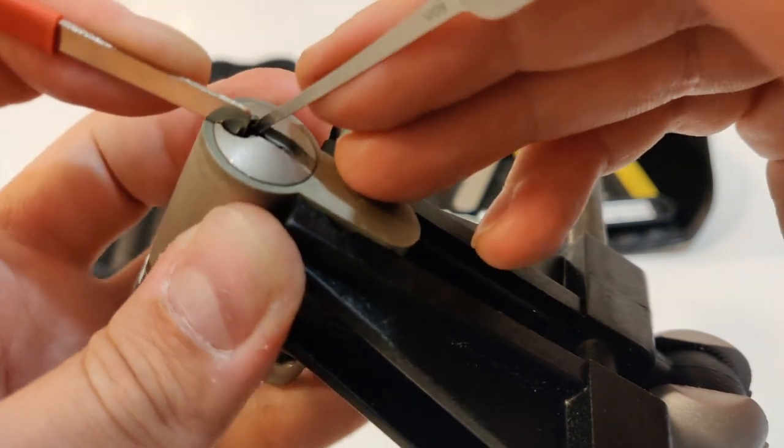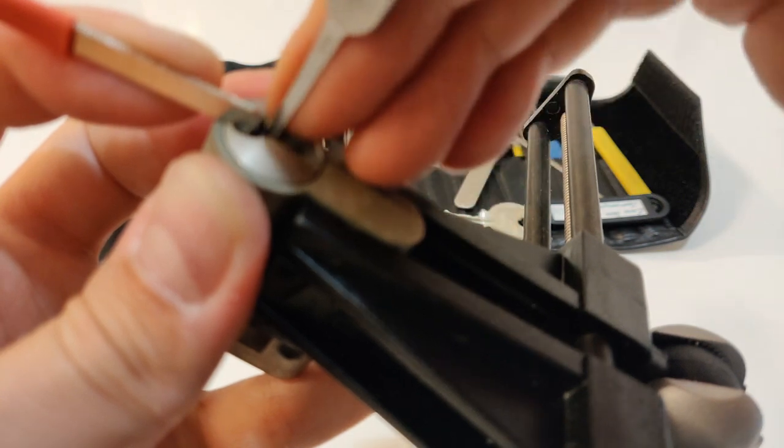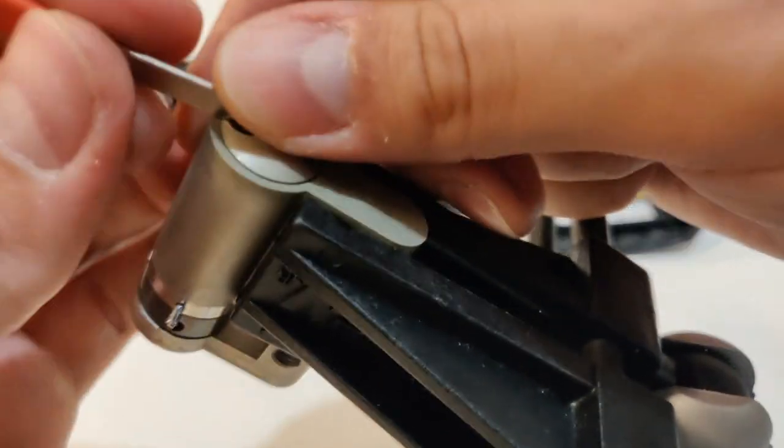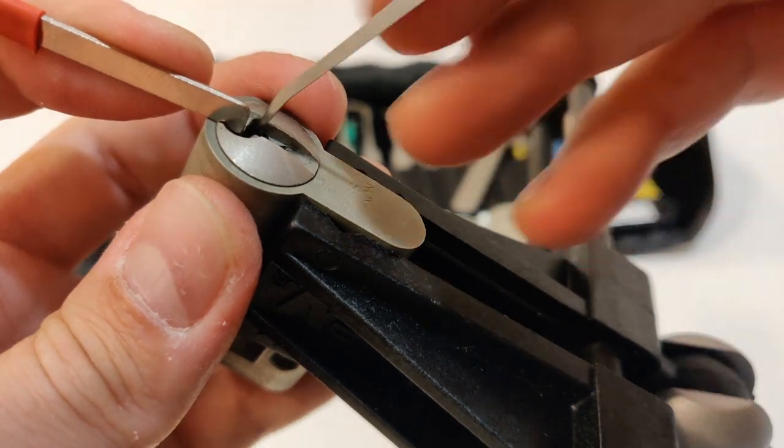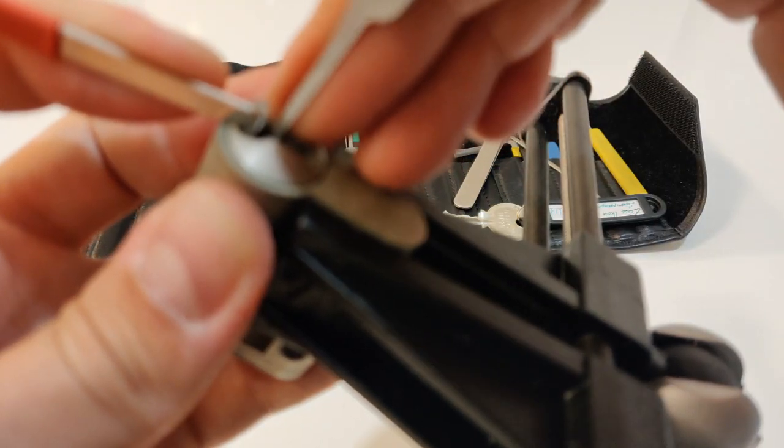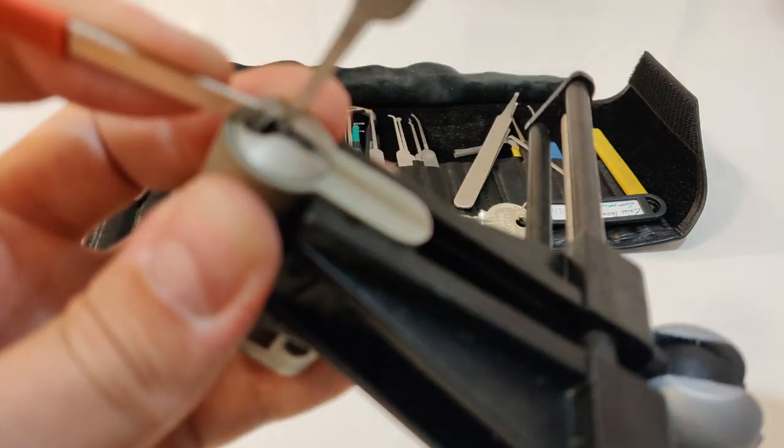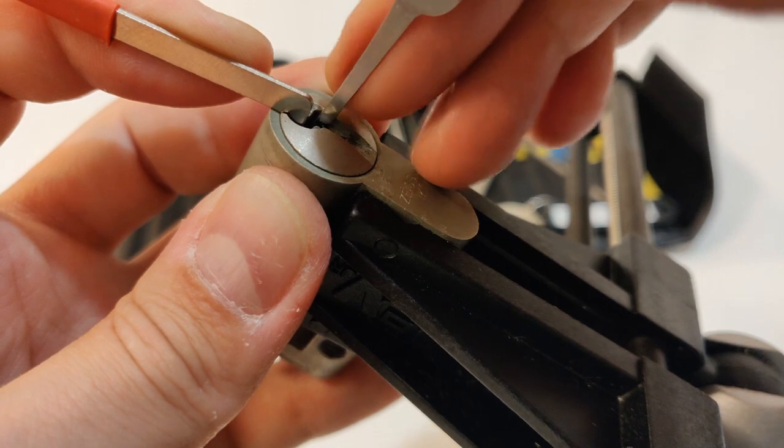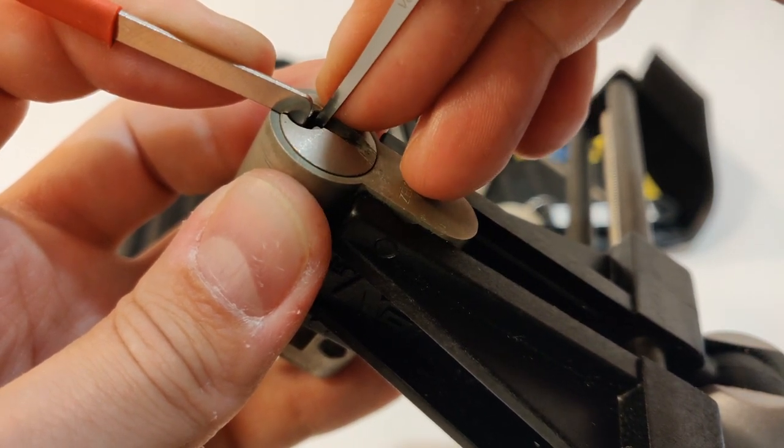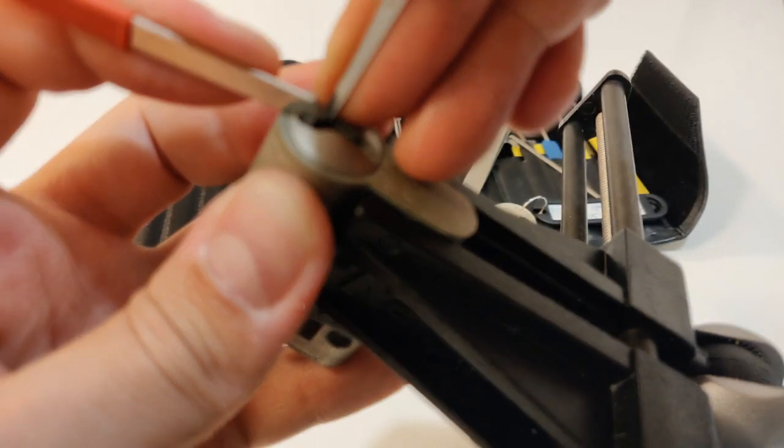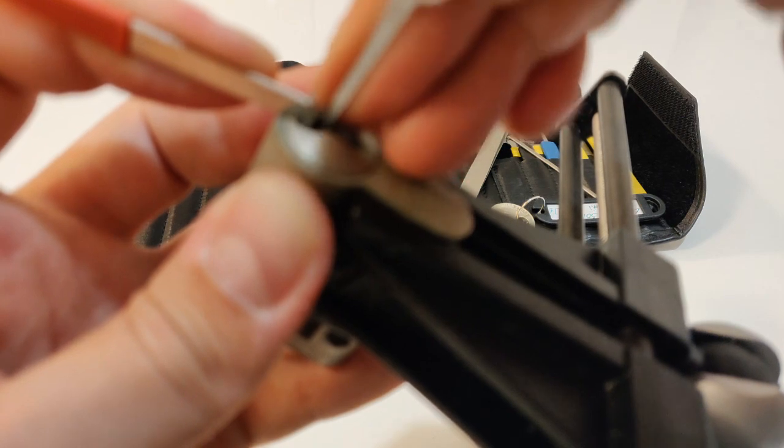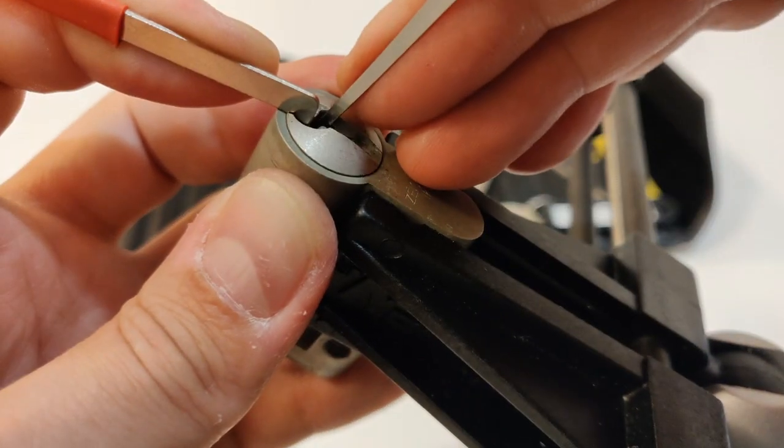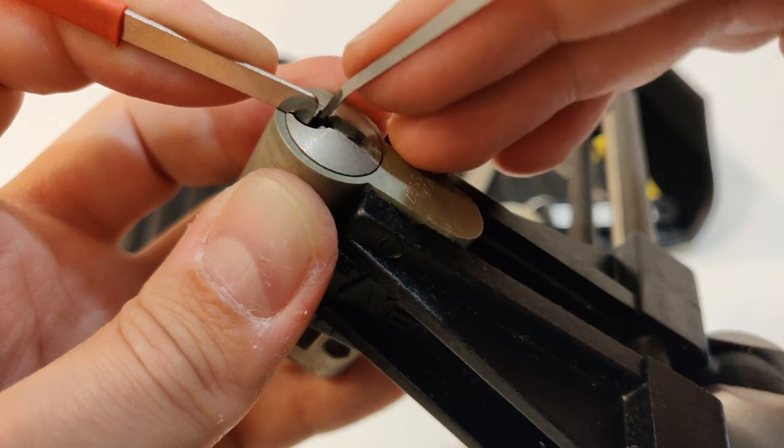Nothing is binding so maybe I will increase the tension, or I overset something. Low because of the long pins 1 and 3. Pin 5 is binding, click, and I'm in a deep false set. Now pin 5, then pin 4, and I lost my false set again.